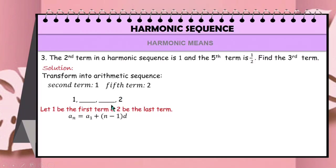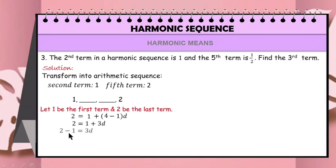The last term a_n is 2, the first term is 1, and the number of terms is 4 — we have 1, 2, 3, 4 terms. So 4 minus 1 is 3, copy d, then transpose 1 to the left side and subtract. 2 minus 1 is 1. Divide the equation by 3 to solve for d. Thus, d is equal to 1/3.